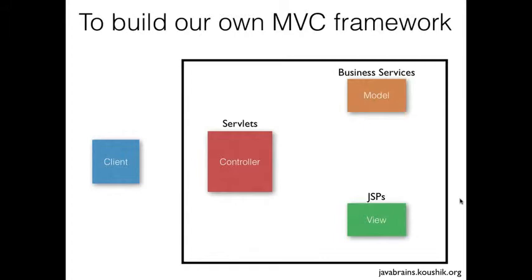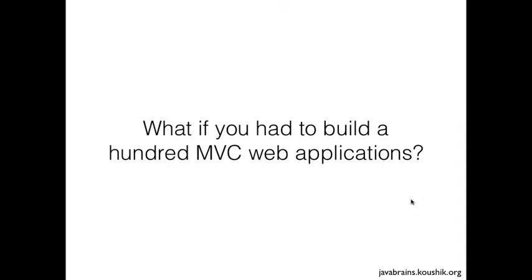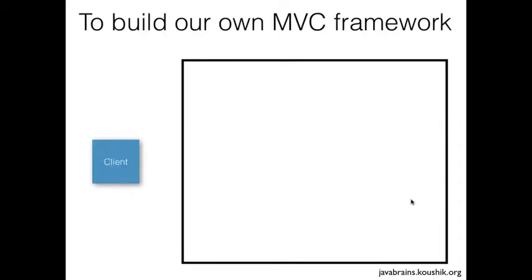If you're designing a framework, you need to isolate all the common things you do every time you build a web application. Let's say somebody gave you the task of building a hundred MVC web applications. You would not want to create all three different modules from scratch for each one — you'd want some common classes you could use in every application. So if you had to build a hundred web applications, you would design a framework that gets you started quickly. What would the elements of a web MVC framework be if we had to design our own? Let's say we don't have Struts or Struts2 — you're building your own MVC framework.